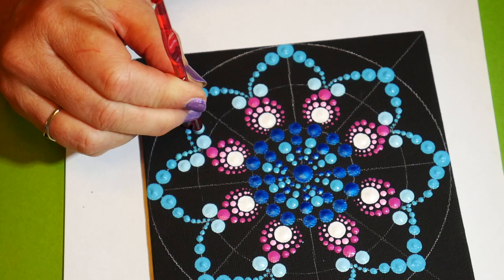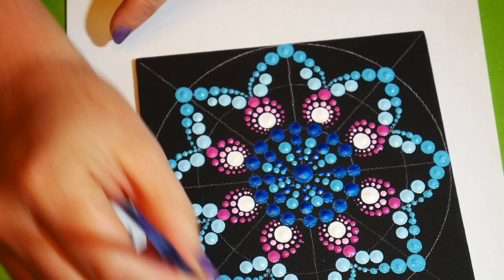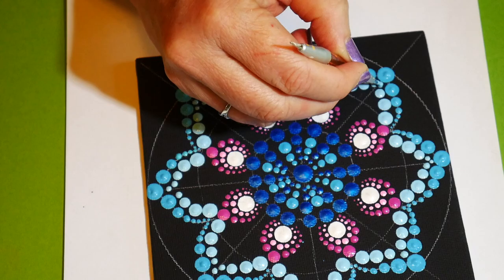Now I'm going back with a paler blue and I'm going to be walking those dots backwards up along the same edge of the leaf, just in a different direction, going from larger to smaller until we get back to the point.